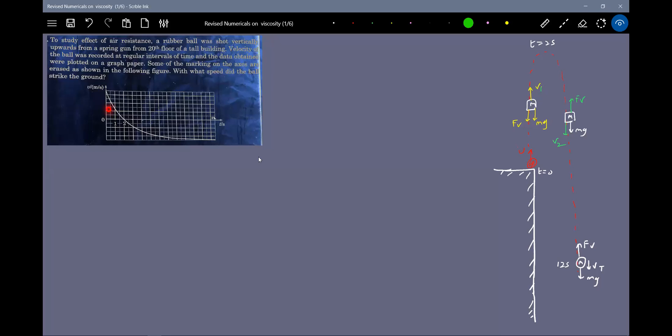We don't know this velocity, but we have divisions in the graph: 1, 2, 3, 4, 5, 6, 7. Let's assume this to be 7n and this to be minus 5n. We'll calculate the value of n to solve the problem. The initial velocity is 7n and the terminal velocity is 5n.